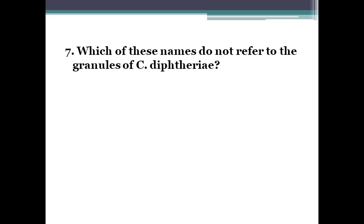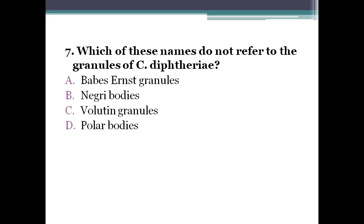Next question: which of these names does not refer to the granules of Corynebacterium diphtheriae? Option A, Babes-Ernst granules. Option B, Negri bodies. Option C, volutin granules. Option D, polar bodies. The right answer is Negri bodies — they are not present in Corynebacterium diphtheriae. Negri bodies are intracytoplasmic inclusion bodies seen in rabies viral infection.